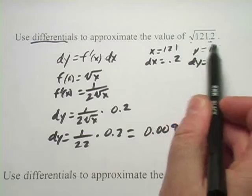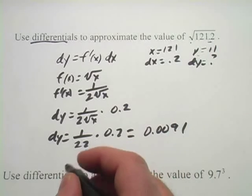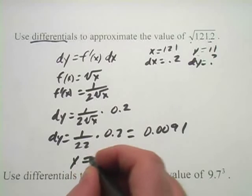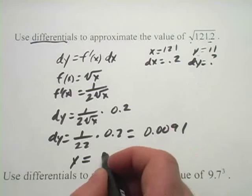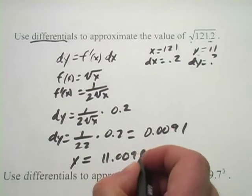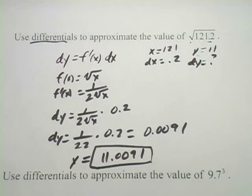That's what we're going to add to our y value here. So our new y here, or our value of the square root of 121.2, is 11.0091. Let's try another one.